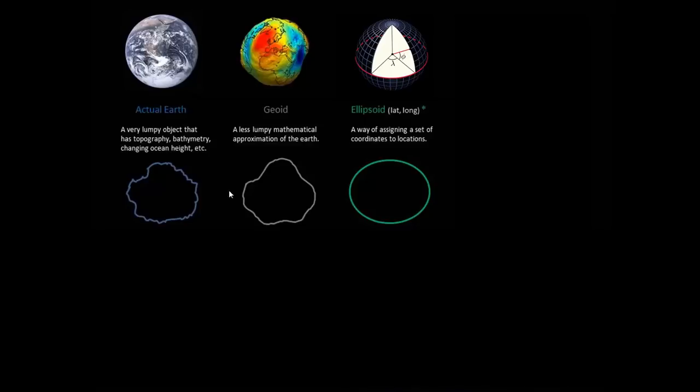So latitude, hopefully as you know, climbs like a ladder. It measures how high we are off of zero at the equator, 90 at the poles, and we'd say plus 90 and negative 90, negative 90 being the south pole, plus 90 being the north pole.